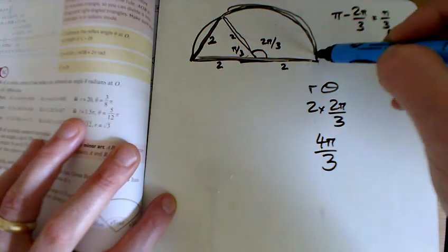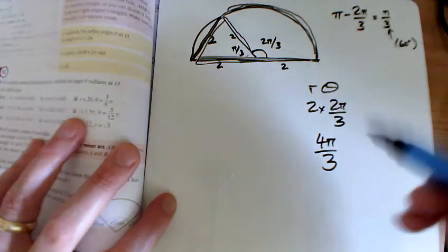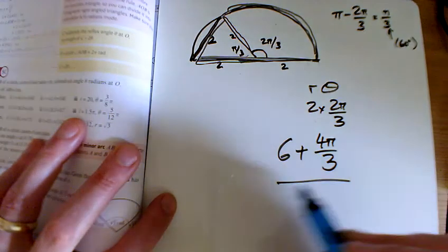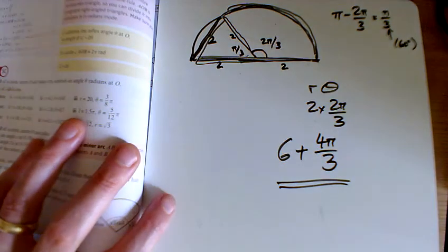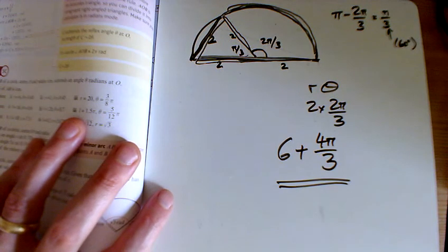So the curved bit's 4 pi over 3, here and here is 2 and 2 and 2, which is 6, so the total perimeter of that shape is 6 plus 4 pi over 3.